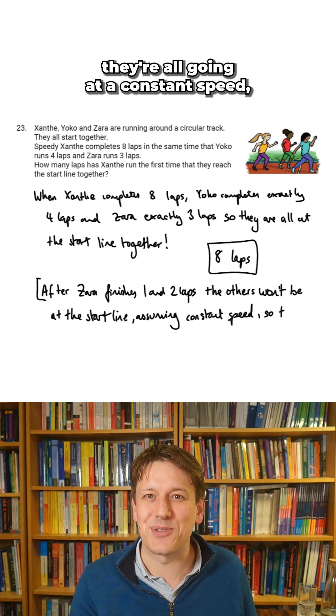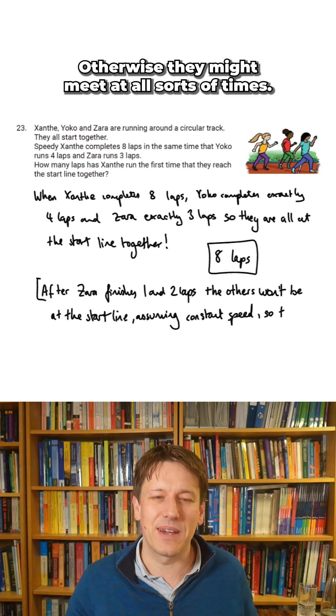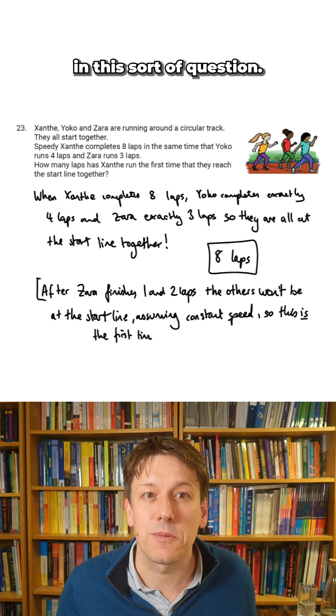Assuming, of course, they're all going at a constant speed. We have to assume they're all going at constant speed around. Otherwise, they might meet at all sorts of times. But we do make that assumption in this sort of question.